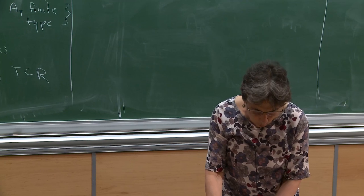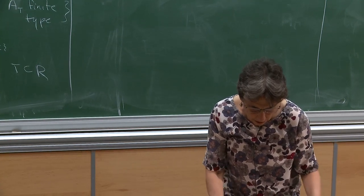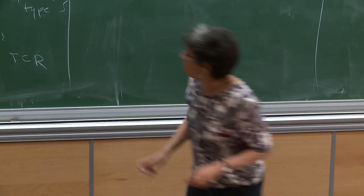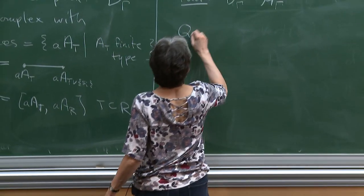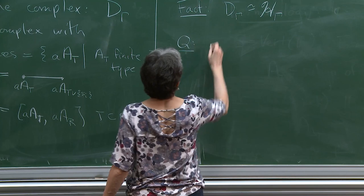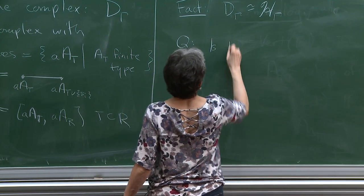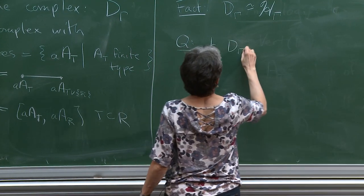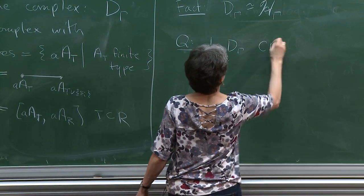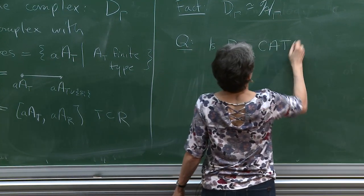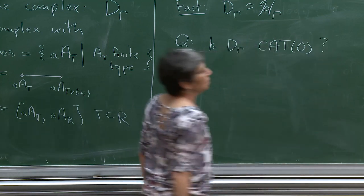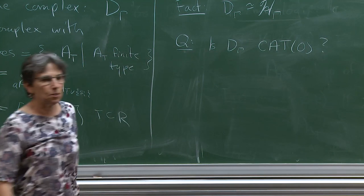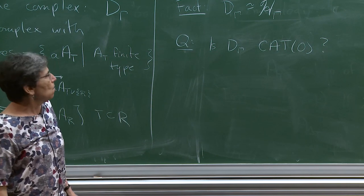The question we want to ask is: when is D(γ) CAT(0)? Let's recall some basic facts about CAT(0).